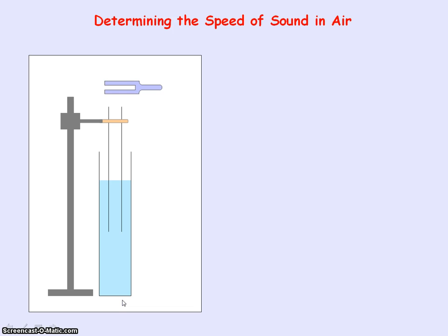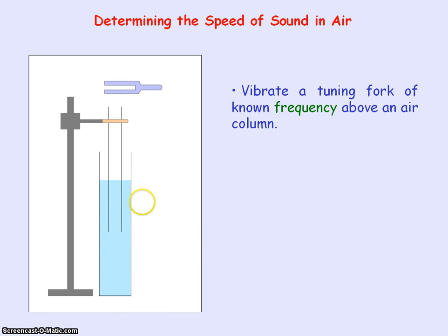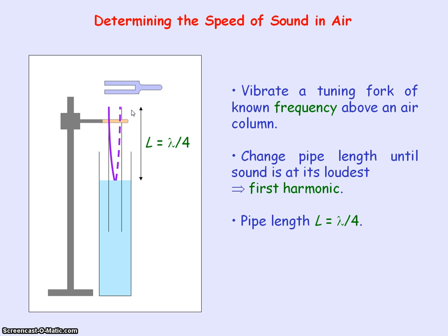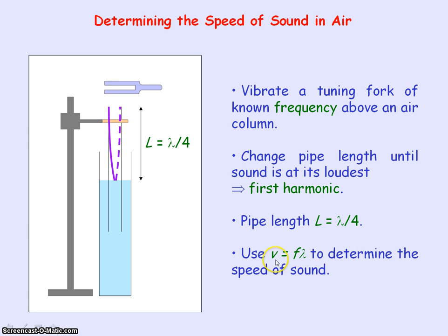We can also use this setup to determine the speed of sound in air. We vibrate a tuning fork of known frequency above the open end and adjust the pipe length until we obtain the loudest sound — the minimum length giving the loudest sound. This represents the first harmonic in the closed pipe, so the length of the pipe equals a quarter of a wavelength, meaning the wavelength equals four times the pipe length. With the wavelength and the known frequency from the tuning fork, we can calculate the speed of sound using V = fλ.